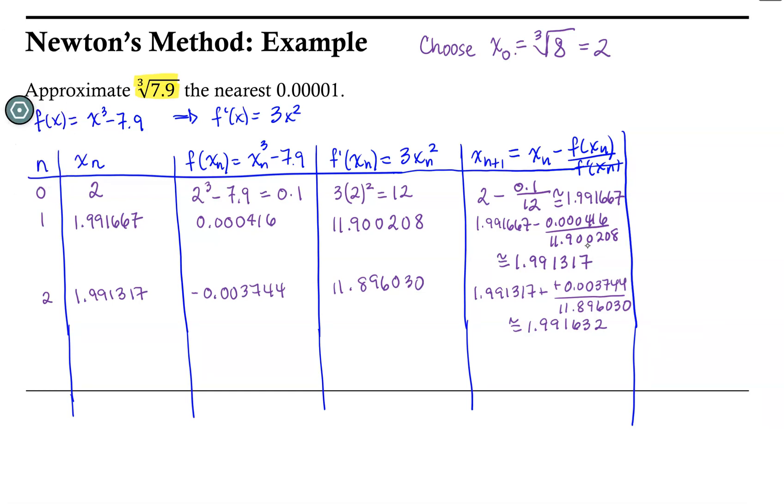And so our third approximation for x is 1.991632. And so now we need to evaluate both the function and the derivative at that value of x. And for the function, we get 0.00004. And for the derivative, we get 11.891794.